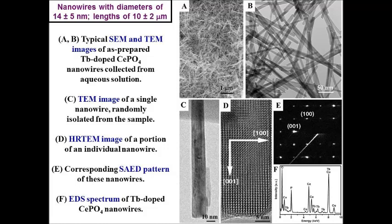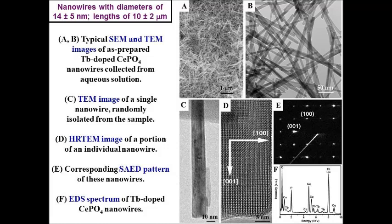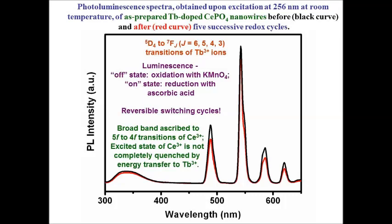For biolabeling purposes, these materials upon excitation at 256 nanometers at room temperature exhibit a degree of irreversible switching. We can switch on their luminescence by reducing with ascorbic acid, and switch them off by oxidizing using potassium permanganate. The broadband observed is ascribed to the 5F to 4F transitions of cerium-3+, where the excited state is not completely quenched by energy transfer to terbium-3+. Importantly, if you subject these wires to successive redox cycles, they maintain their structural integrity.